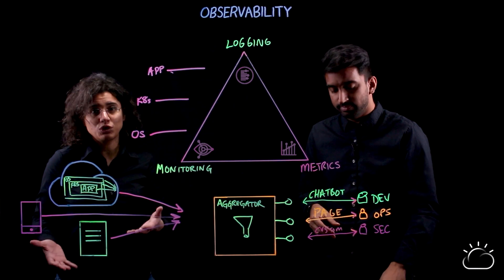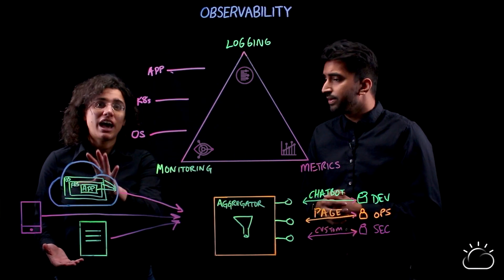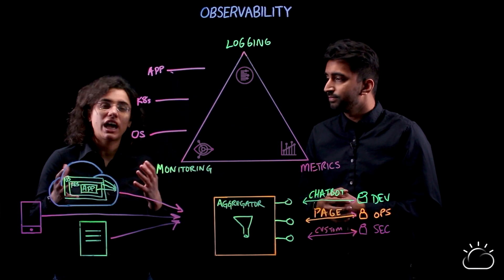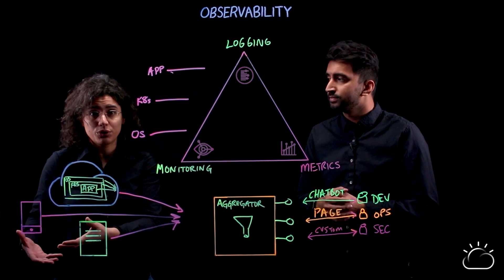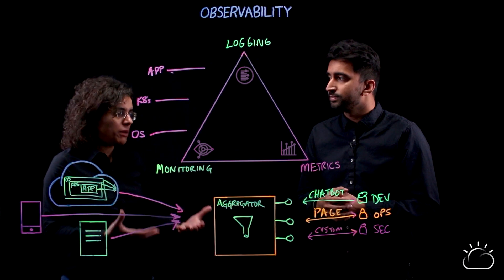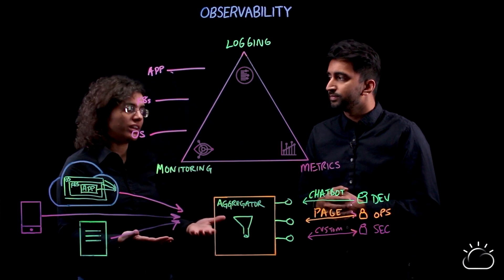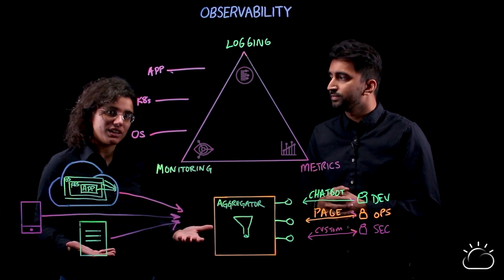And to be honest, this is your new norm. You're going to have multiple clouds. You're going to have on-prem systems. You're going to have data coming directly in from your users. You need to be able to understand what's going on. And really, this is what observability is all about.